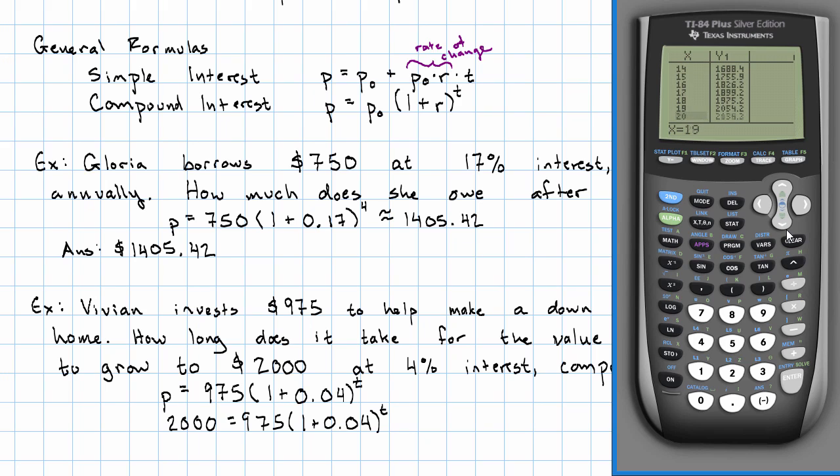We'll look at the table. And we scroll. Ah! Here we go. So, after 18 years, it's 1975. After 19 years, we have $2,054. So, the answer is 19 years is the minimum amount of time for the balance to reach $2,000.